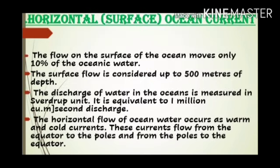Surface ocean currents are also called horizontal ocean currents. The flow on the surface moves only 10 percent of the ocean water. The surface flow is considered up to 500 meters of depth. The discharge of water in the ocean is measured in Sverdrup units, which is equivalent to 1 million cubic meters per second. Horizontal ocean currents occur as warm and cold currents.